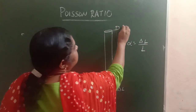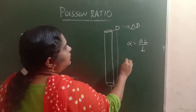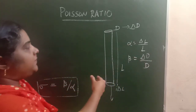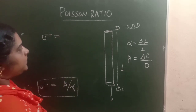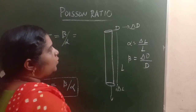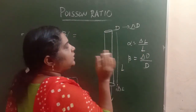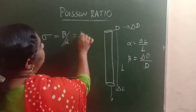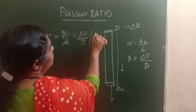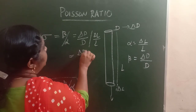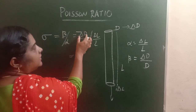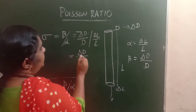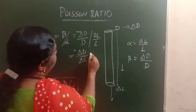There will be contraction in the diameter — say it is delta D. So beta equals delta D by D, where D is the original diameter of the material. The Poisson's ratio sigma equals beta by alpha. Since elongation is taken as positive, contraction should be negative. So sigma equals minus delta D by D, divided by delta L by L — which simplifies to minus delta D by delta L multiplied by L by D.